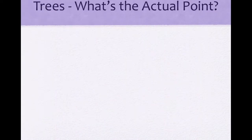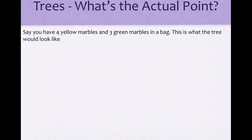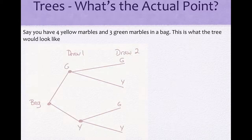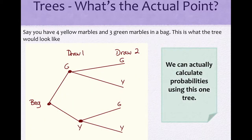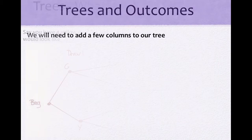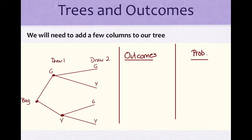Trees. So what's the actual point of these trees that we saw in the last PowerPoint? Say you have four yellow marbles and three green marbles in a bag — this is what the tree would look like. We can actually calculate the probabilities using this one tree. You start with your bag, you draw one green or yellow, and then your second draw you also have green and yellow. We're going to add the outcomes column and the probability column.